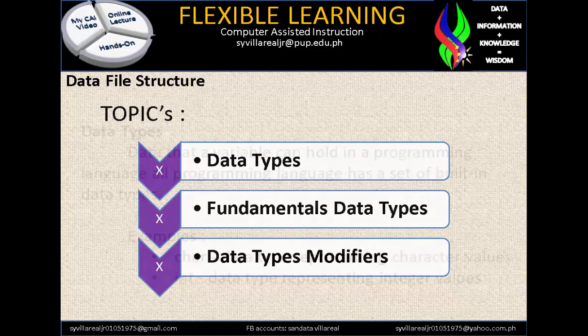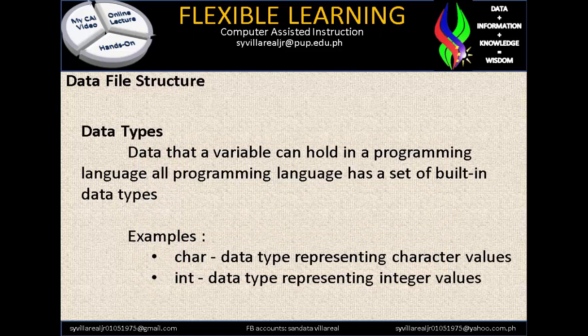Now let's proceed with Data Types. Data Types is the data that a variable can hold in a programming language. All programming languages have a set of built-in data types. Examples are char, which stands for character, and int, which is a prefix of integer — it identifies the data type representing integer values.